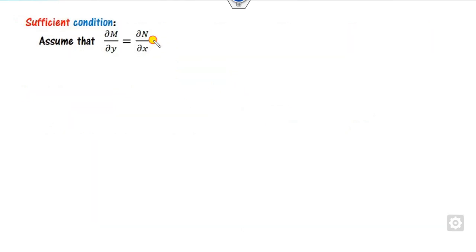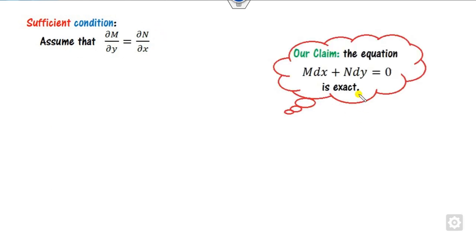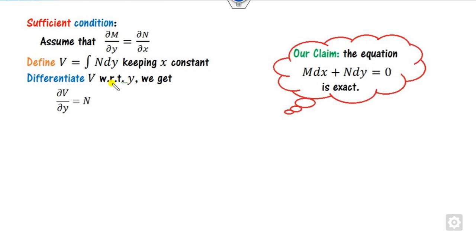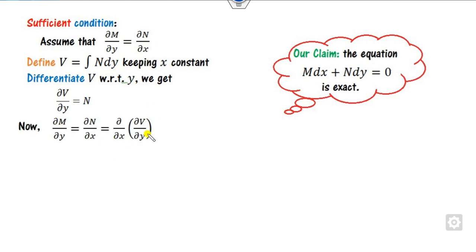Now we assume reversely: we assume ∂M/∂y = ∂N/∂x is true, and our target is to prove the equation is exact — that is, to find a function f such that df = M dx + N dy. To do this, we assume a function v which is the integration of N with respect to y, keeping x as a constant. We then differentiate v with respect to y to get N, and substitute this into our expression to obtain a working equation.